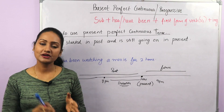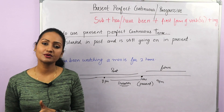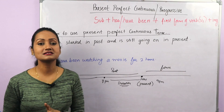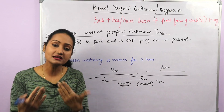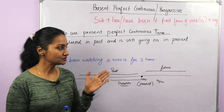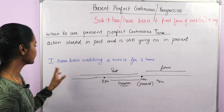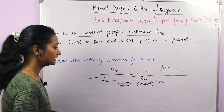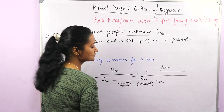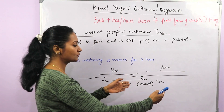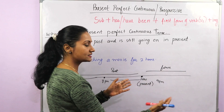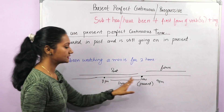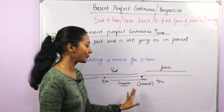Where do we use present perfect continuous tense? We use it to talk about actions that started in the past and are still going on in the present, and they might continue in the future. Let's understand it with an example: 'I have been watching a movie for two hours.' Look at this timeline — 'now' means present, after now is future, and before now is past. Just imagine the time is 9 PM right now.